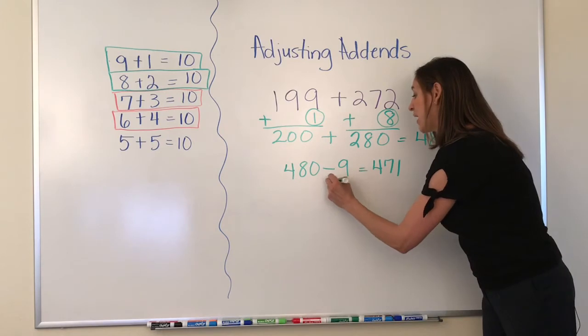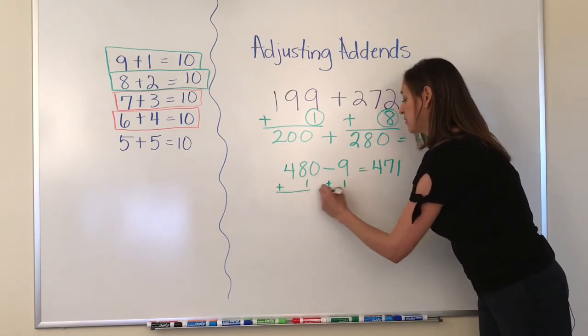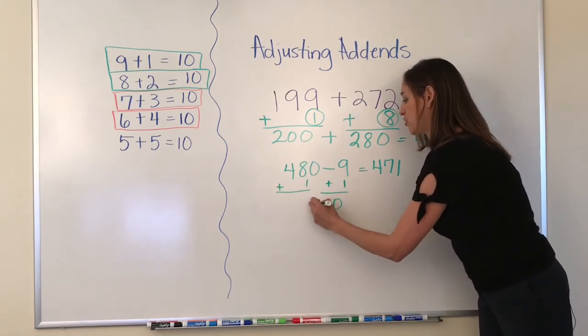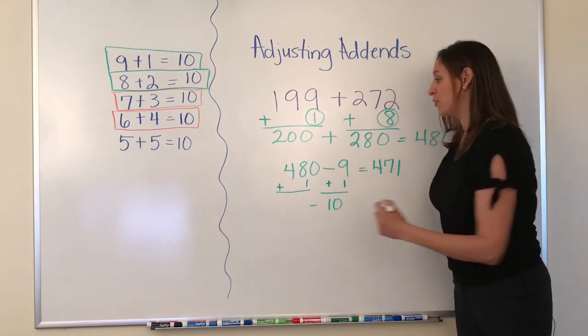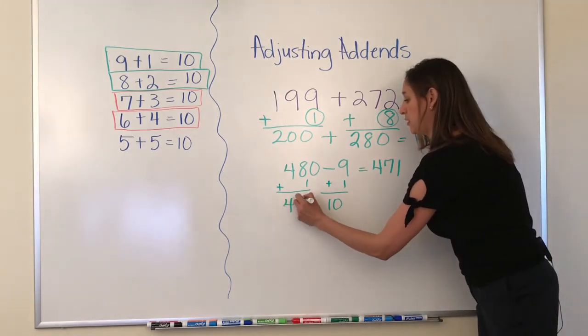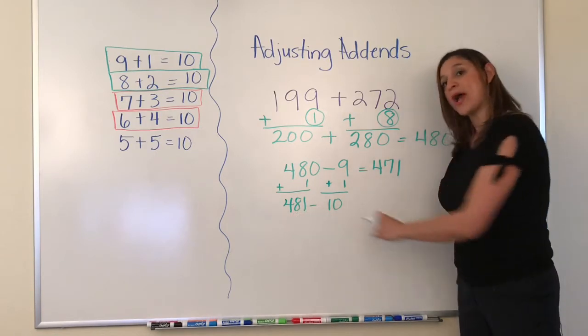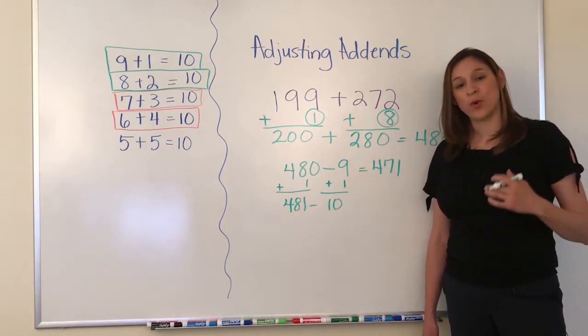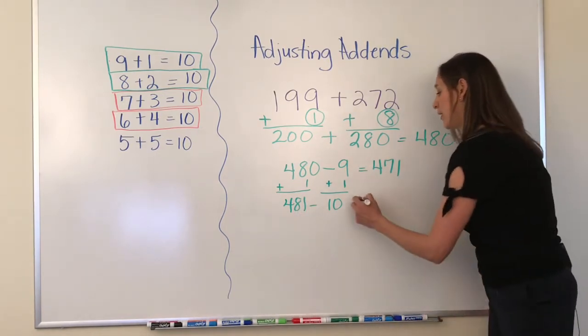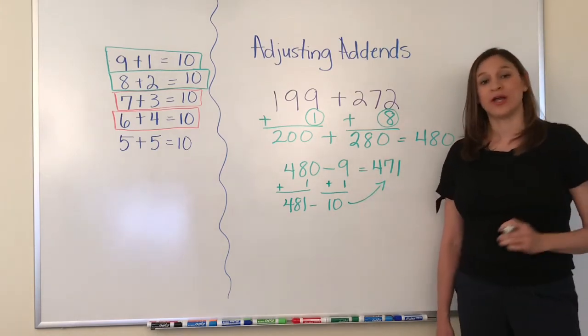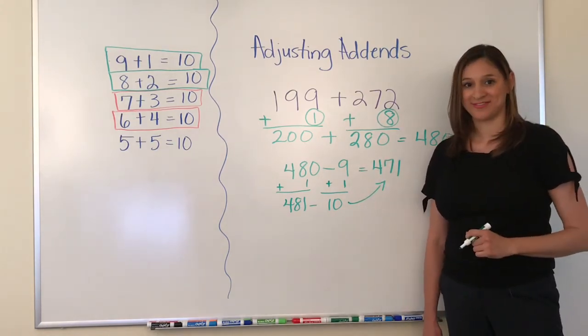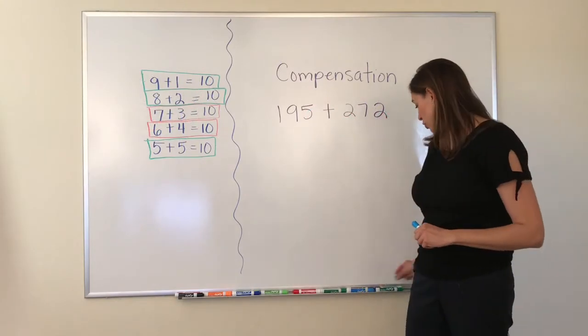If you are still having difficulty subtracting 9 from 480, you can add 1 on both sides, turn that into a friendly number, and then subtract 10 from 481, which also gives you 471.